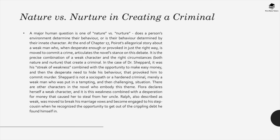There are other characters in the novel who embody this theme. Flora declares herself a weak character and it is this weakness combined with a desperation for money that caused her to steal from her uncle. Ralph, also described as weak, was moved to break his marriage vows and become engaged to his step-cousin when he recognized the opportunity to get out of the crippling debt he found himself in.